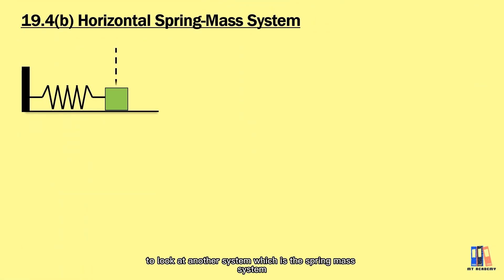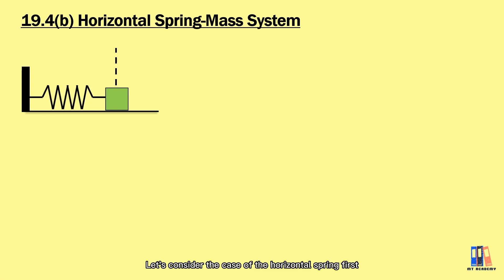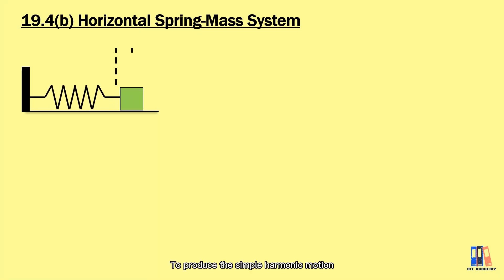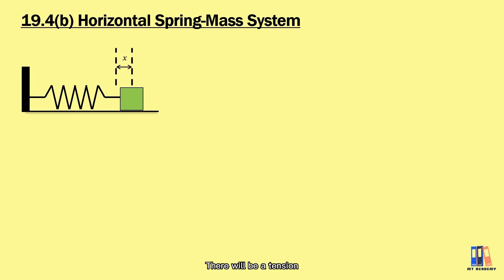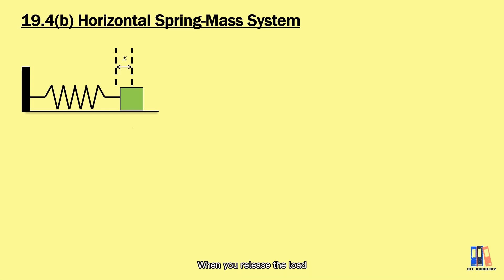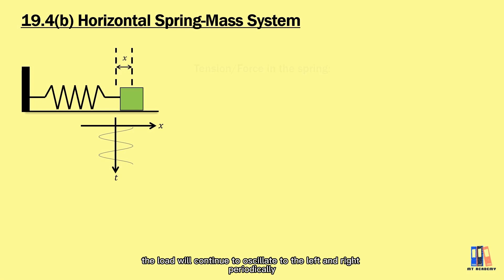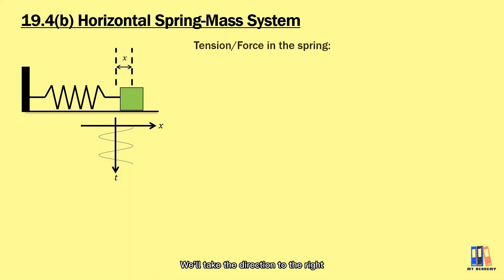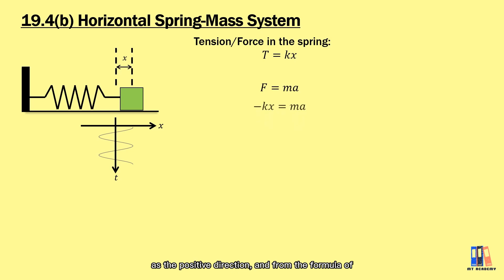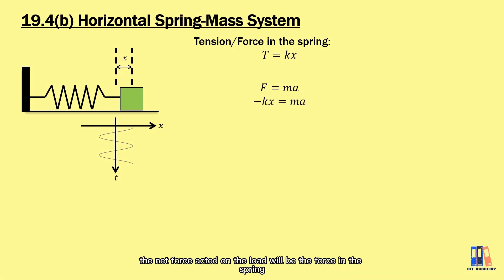Next, we look at the spring-mass system — let's consider the horizontal spring first. Initially, the spring is neither stretched nor compressed. To produce simple harmonic motion, we pull the bob to a certain distance so the spring extends by length x. This creates a tension in the spring given by kx. When released, the bob oscillates left and right periodically. Taking rightward as positive, from F = ma, the net force on the bob is −kx.